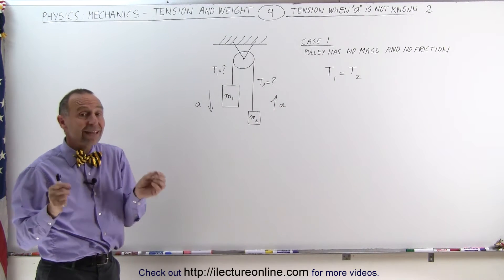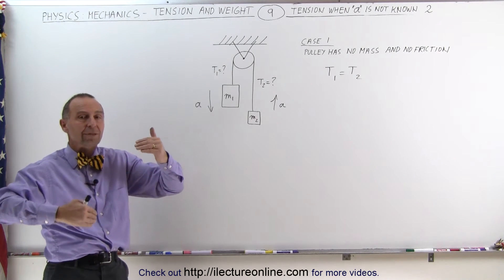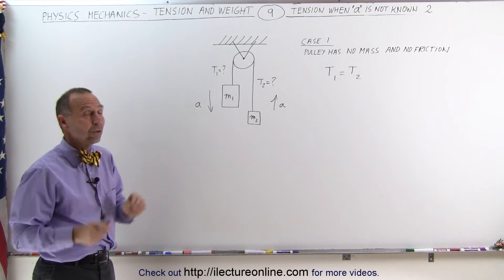The acceleration will be the same for both objects M1 and M2, except the direction will be different, but the magnitude at least will be the same.